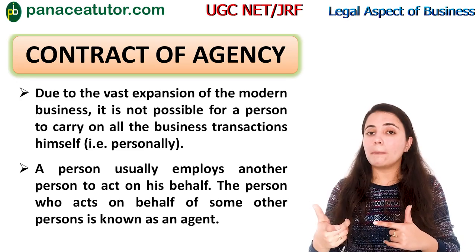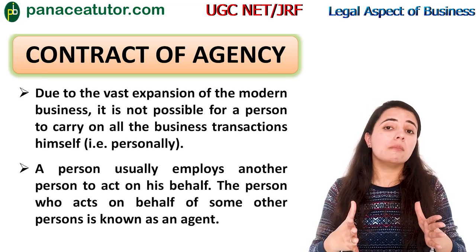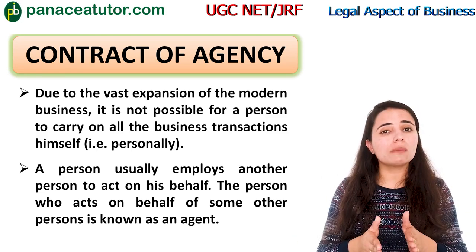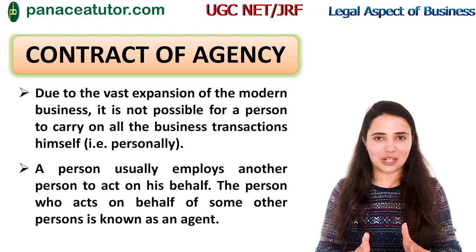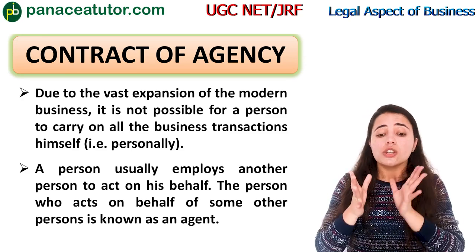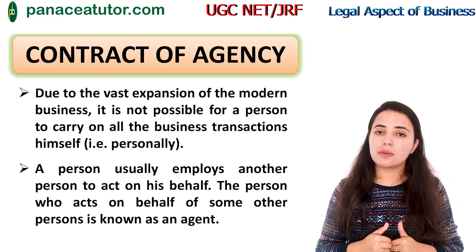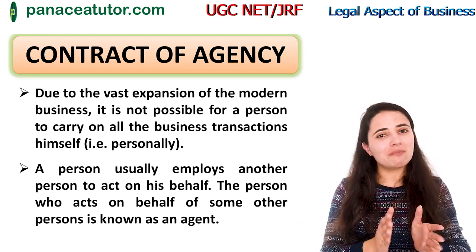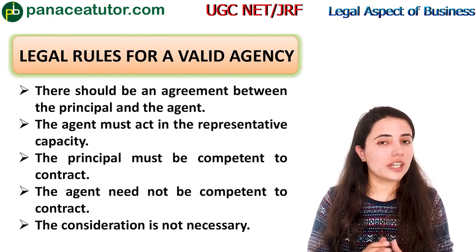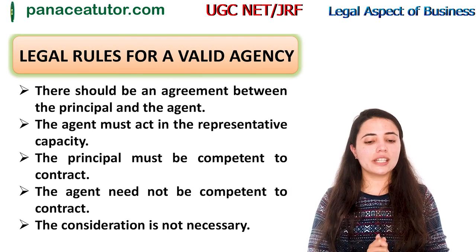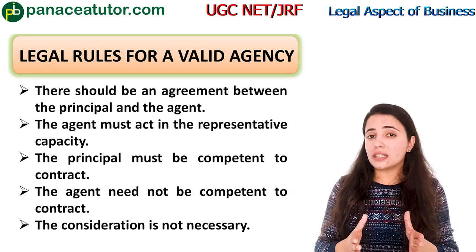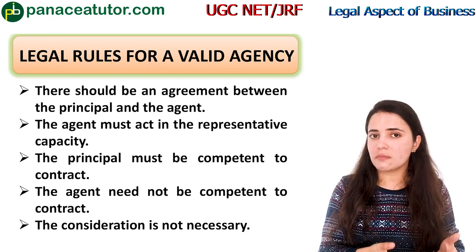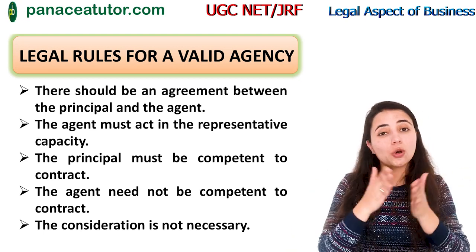The agent is not the owner of the goods; he acts on the principal's behalf. As you can see, a person usually employs another person to act on his behalf. The principal employs the agent, and the agent works on the principal's behalf. Now there are some legal rules for the contract of agency. First, there must be an agreement between the principal and the agent — either an express agreement or an implied agreement.